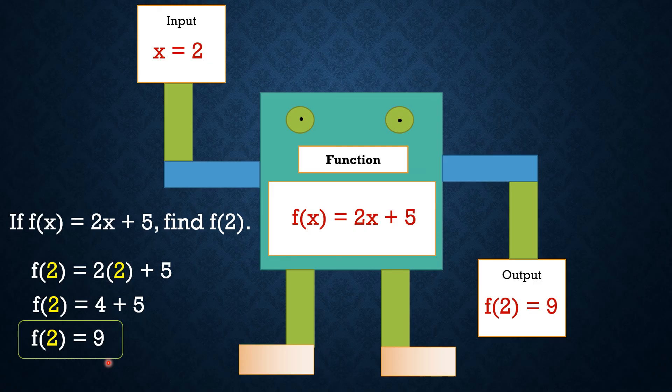So in other words, kapag ang ating function ay f(x) = 2x + 5 at meron tayong input na x = 2, kapag pumasok yun sa ating function, na-process ng ating function, ang magiging output nun is 9. And this is how we evaluate a particular function. Let's take a look at the next slide.